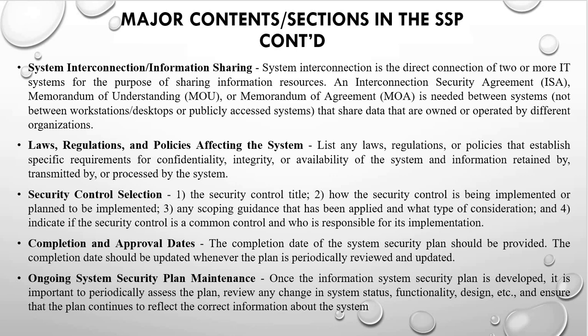Another section is the security controls section — you must have the title of each security control, how many controls have been implemented or planned, any scoping guidance applied, and what type of consideration. You also indicate if the security control is a common control, a system-specific control, or a hybrid control, and who is responsible for its implementation. Common controls have the capacity to secure multiple systems at a time; system-specific controls secure just one information system; and hybrid controls have characteristics of both. Another major section is the completion and approval dates — these should be updated whenever the plan is periodically reviewed.